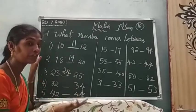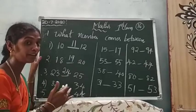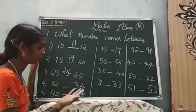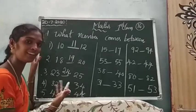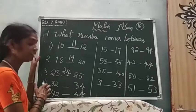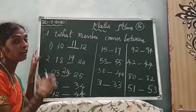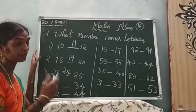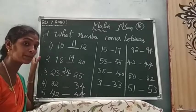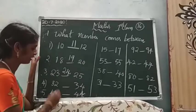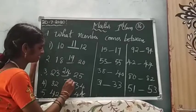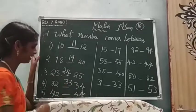24. 25 before the number? 24. Good. 25 before the number — 24. Good. 33 after the number — 34. Before the number which number? 33. Good.